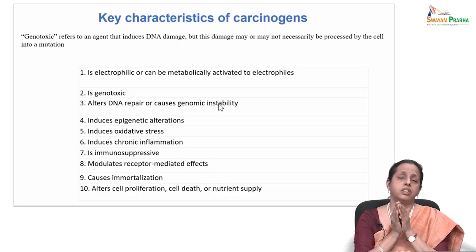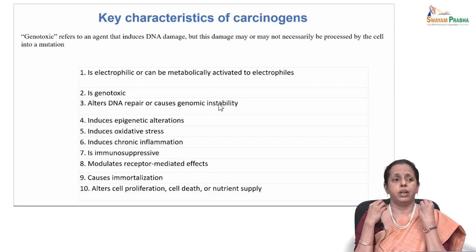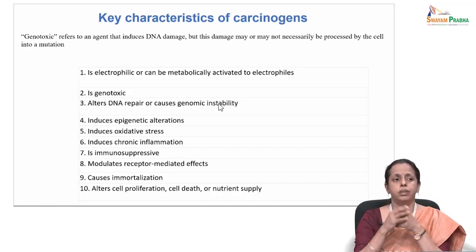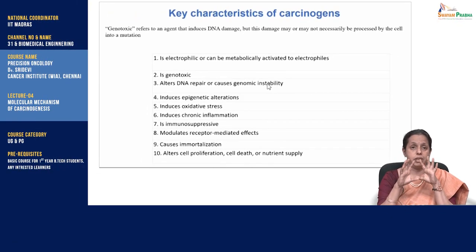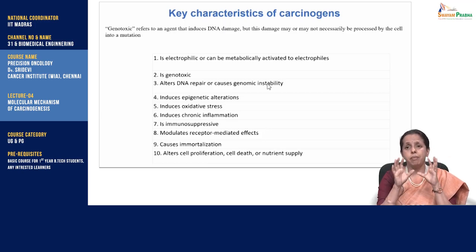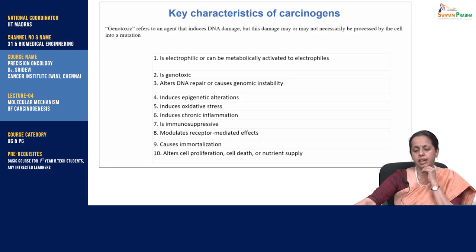Some carcinogens are direct-acting electrophiles whereas others require transformation by a process called metabolic activation. Keep in mind some carcinogens could be in an inert state chemically — for example benzene may not be immediately carcinogenic on skin contact, but only when metabolized in the body by the action of cytochrome enzymes. The classic examples of chemical agents that become carcinogenic are polycyclic aromatic hydrocarbons and benzene — these are usually inert by themselves.